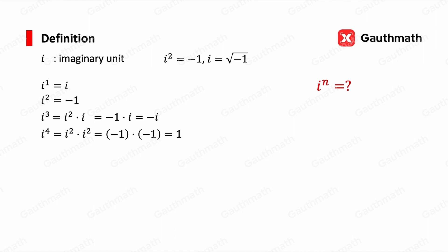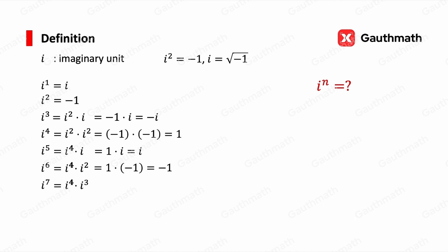We can compute four more values. i to the power of 5 equals i to the power of 4 times i, and since i to the power of 4 equals 1, that is i. i to the power of 6 equals i to the power of 4 times i squared, which is 1 times negative 1, equaling negative 1. i to the power of 7 is i to the power of 4 times i cubed, which is 1 times negative i, giving negative i. And i to the power of 8 is i to the power of 4 times i to the power of 4, which is 1 times 1, equaling 1.